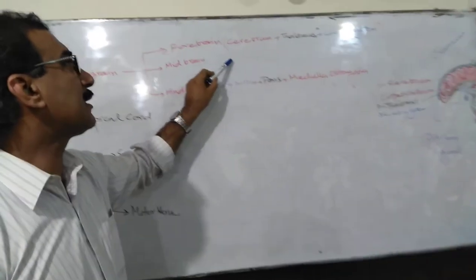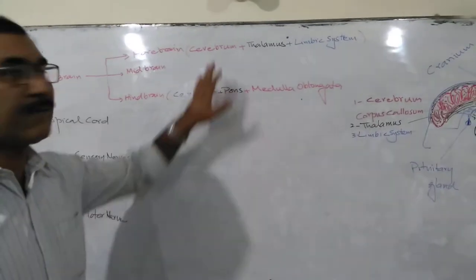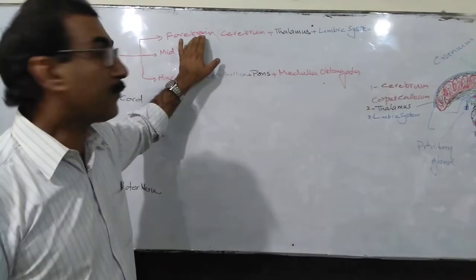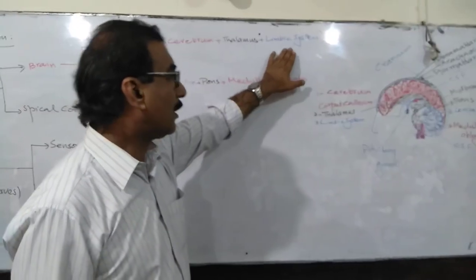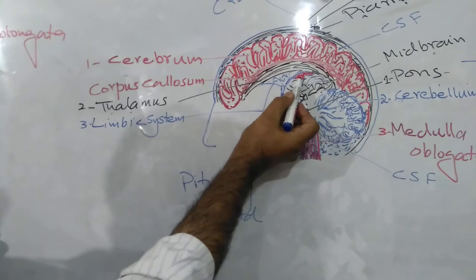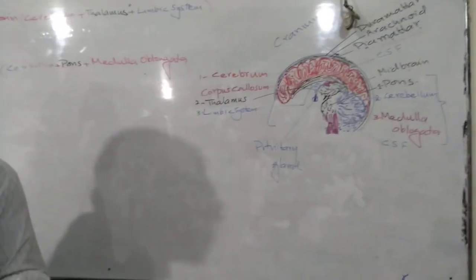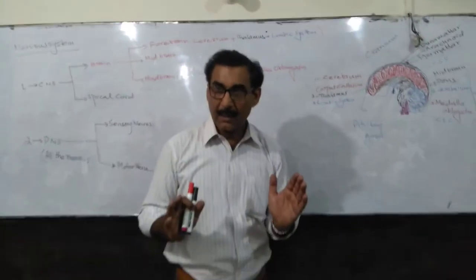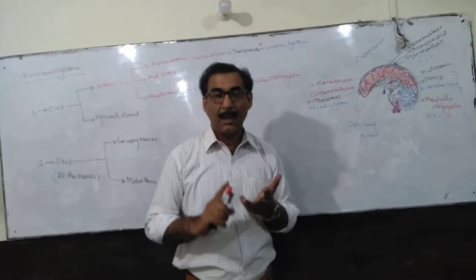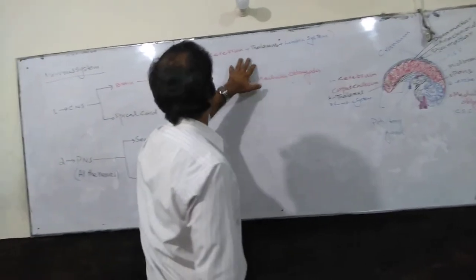The forebrain is further subdivided into the cerebrum — you can see it here — and the thalamus. The third part is the limbic system, consisting of the hypothalamus, amygdala, and hippocampus. So these three major structures — cerebrum, thalamus, and limbic system — constitute your forebrain.